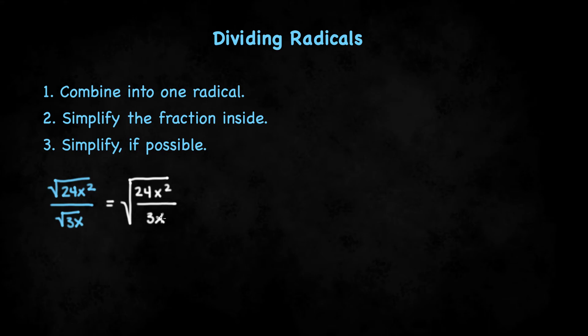And to make this easier to work with, we will simplify the fraction inside. So, 24 divided by 3 is 8, and x squared divided by x is simply x.